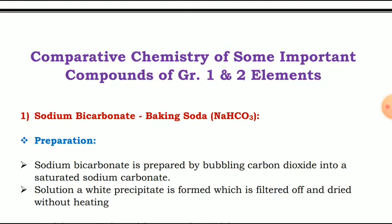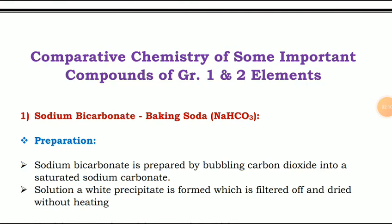There are total six important compounds: sodium bicarbonate, sodium carbonate, sodium chloride, sodium hydroxide, calcium oxide, and calcium carbonate. Out of these, first one will be sodium bicarbonate, also known as baking soda. Its chemical formula is NaHCO₃. We will see its preparation, properties, and uses.